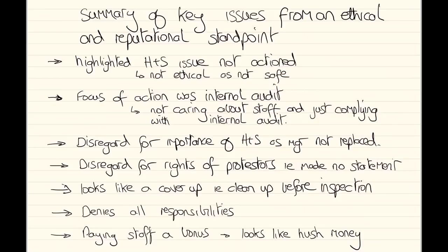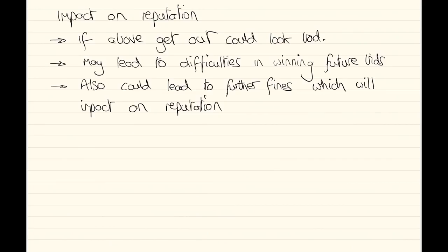So what do we pick from that? In summary: health and safety issues were not actioned, which is contrary to what was said in the annual report. They weren't particularly caring about staff — just complying with internal audit. Not really bothered about the health and safety manager as they weren't replaced. They made no statement about protesters, so they don't seem concerned about other stakeholders. They're going to clean up for the inspection — that could look like a cover-up. Denying all responsibility when they don't know the full facts. Paying staff a bonus — could that be hush money? If those things get out, how would it look? Bad reputation could impact our ability to win future contracts and lead to further fines.